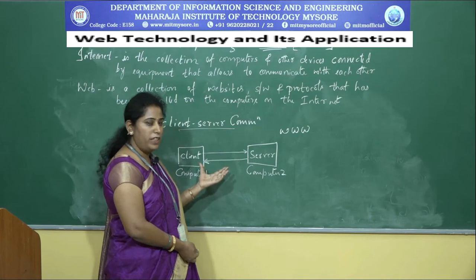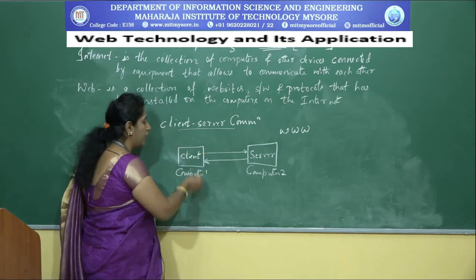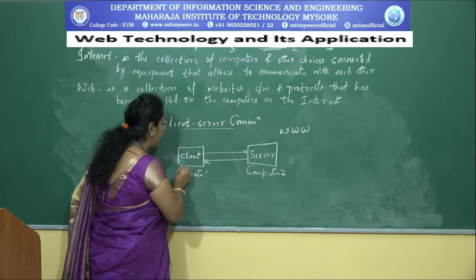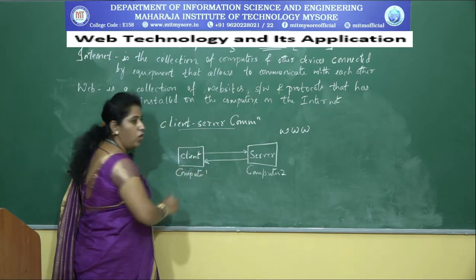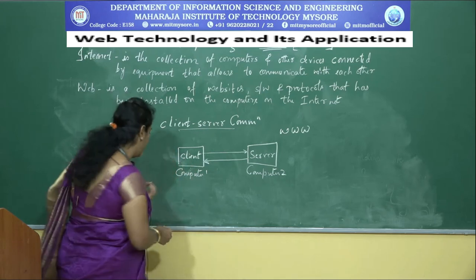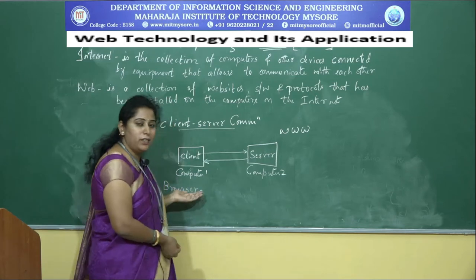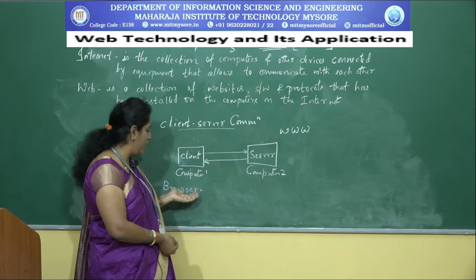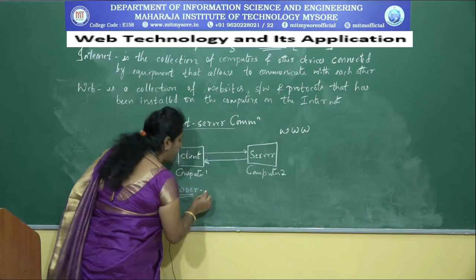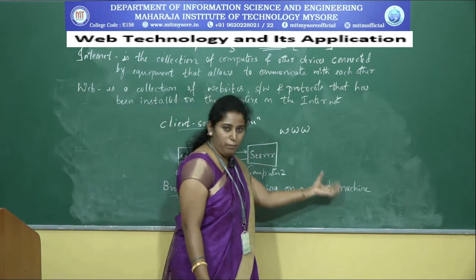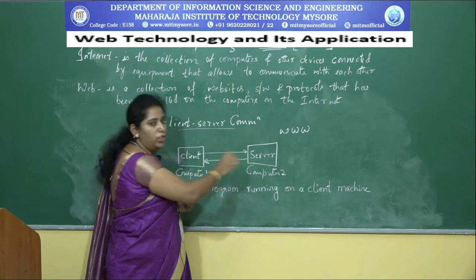When two computers want to communicate, they must be connected via internet. How is the web used here? The client initiates communication and sends a request to the server. From the client side on the web, the request is started through a browser. A browser is a program running on a client machine, through which the client initiates communication by sending a request to the server.